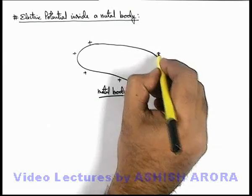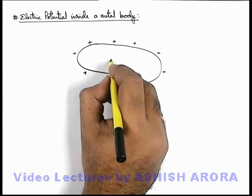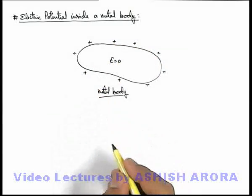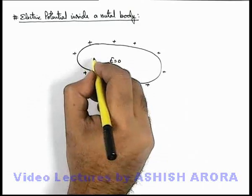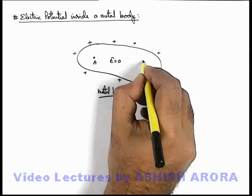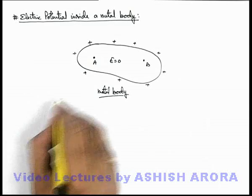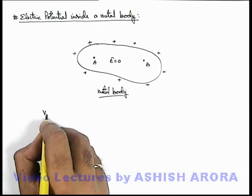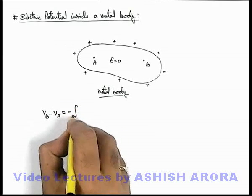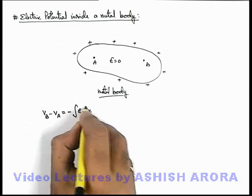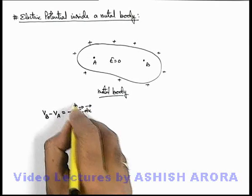At every interior point, we know that net electric field is zero. If we consider two points A and B within the metal body, then the potential difference between points A and B, V_B minus V_A, can be written as minus integration of E dot dx from A to B.